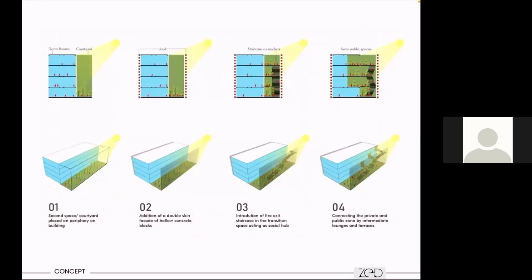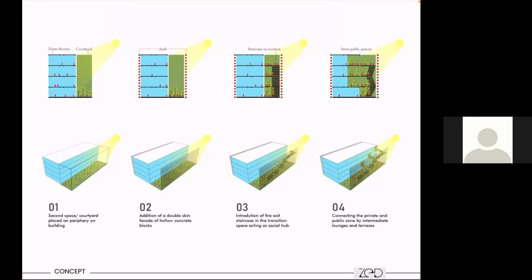After analyzing the climate, we understood that it is very crucial to have thermal mass and a buffer space — a transition zone between the inside and the outside — to create multiple spaces, not only to enhance the thermal performance of the building, but also to create more user-specific and diverse spaces where one can interact with peers in groups of smaller or larger numbers and do physical or social activities.